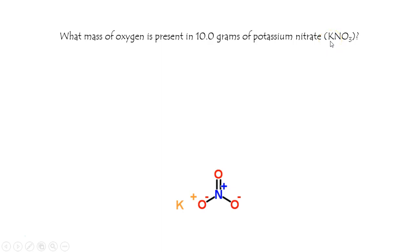you'll find that KNO3 has a molecular weight of 101 grams per mole, of which 16, 32, 48 came from oxygen.